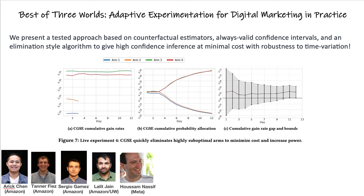To deal with this, we propose a tiered approach in which we develop counterfactual estimators for performance of treatments, use always-valid confidence intervals on these estimators, and propose an elimination-style algorithm based on these estimators and confidence intervals to give an approach that has high confidence inference for correctness with minimal regret and maintains robustness to time variation. Please read our paper to learn more.